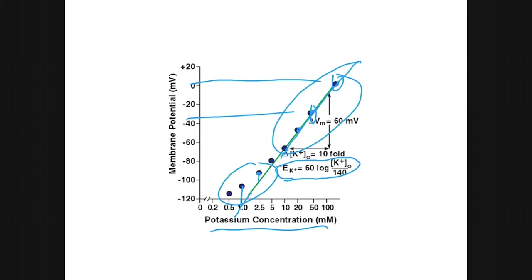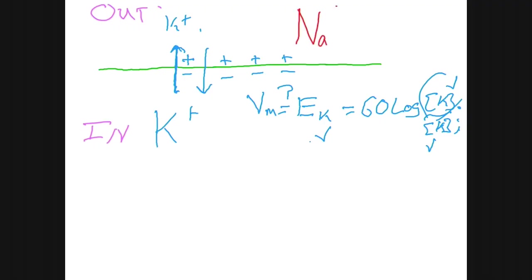The deviations indicate another ion is at play — sodium. Sodium is in high concentration outside the cell and low concentration inside. So sodium tends to move into the cell, and some of that sodium entry would make the membrane potential more positive than expected from a membrane permeable only to potassium. The membrane is actually permeable to two ions: potassium, which wants to go out, and sodium, which wants to go in — and the two work against each other.